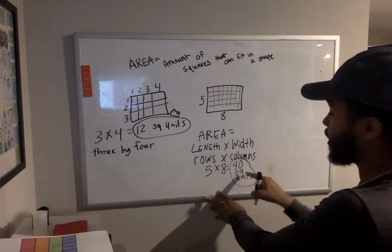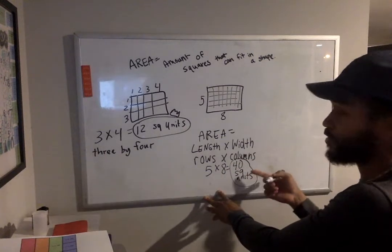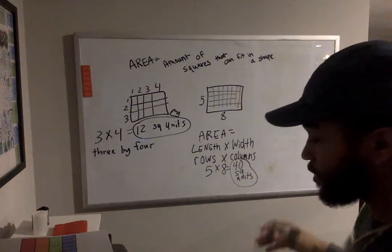And I will get 40 square units. Remember, because it's area, our answer is going to have square something. It could be square centimeters, square units, square something.